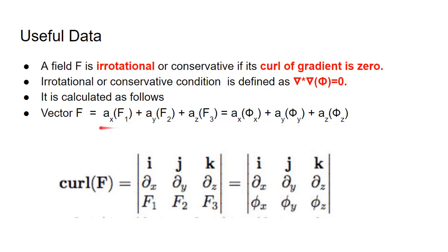This is calculated as follows. The vector field F is equal to ax·f1 plus ay·f2 plus az·f3, which can also be written as ax·φx plus ay·φy plus az·φz, where ax, ay, az are the unit vectors in the direction of x, y, and z respectively. The curl of the vector field F is calculated by taking the determinant of the corresponding matrix.